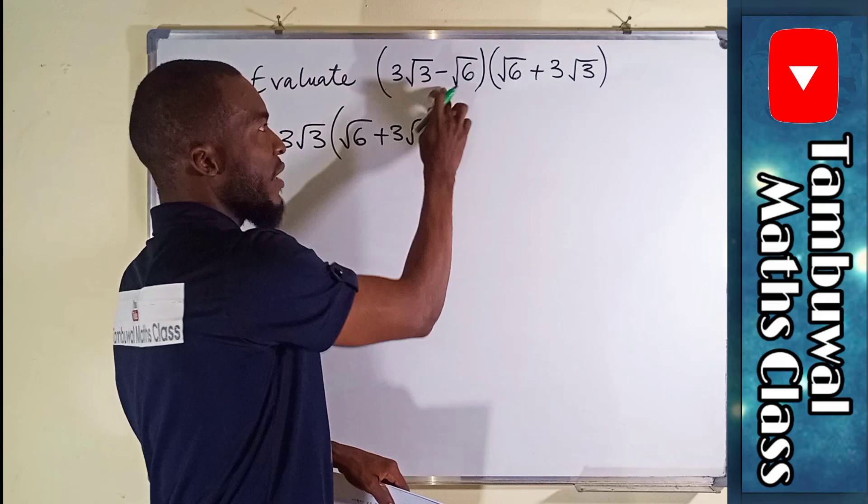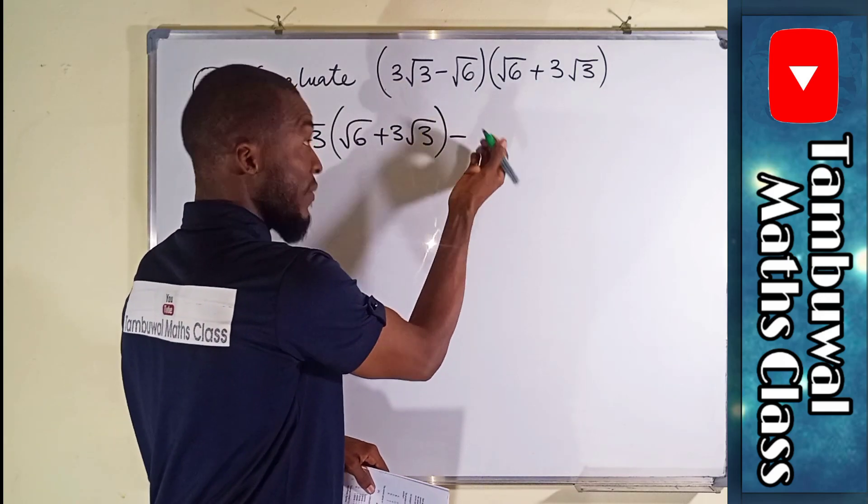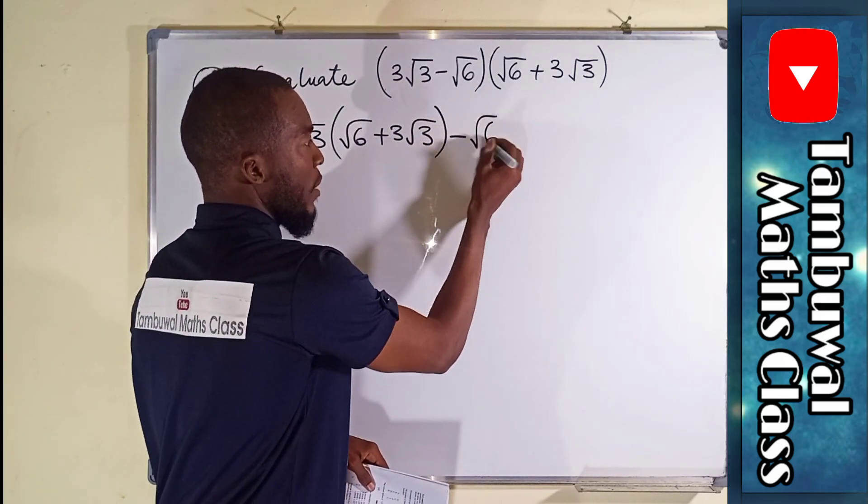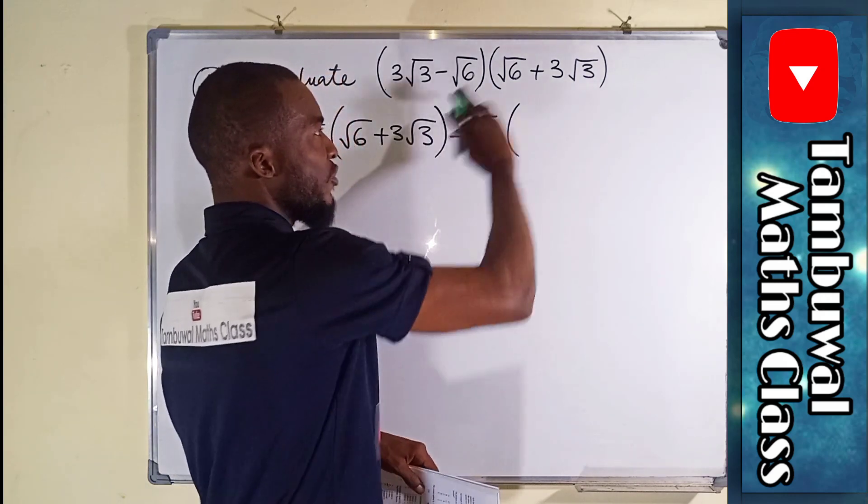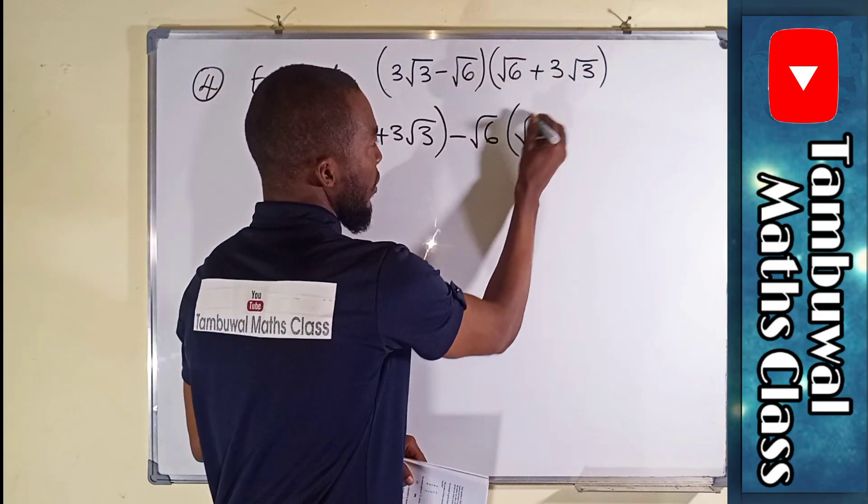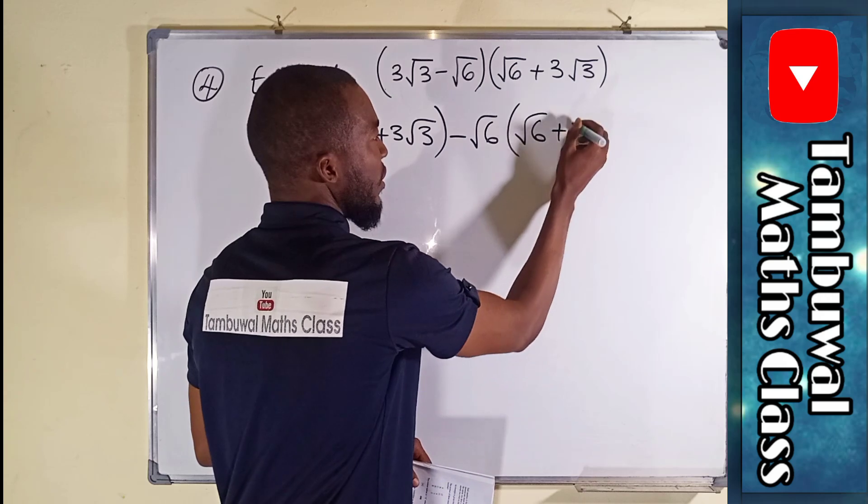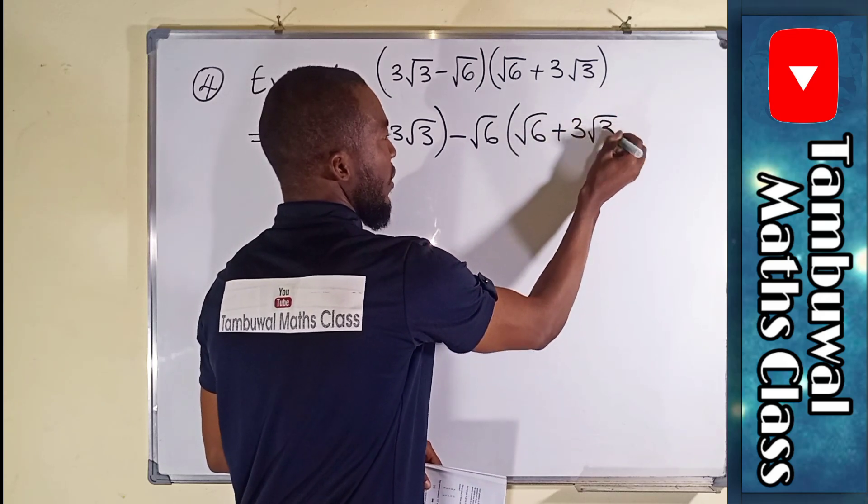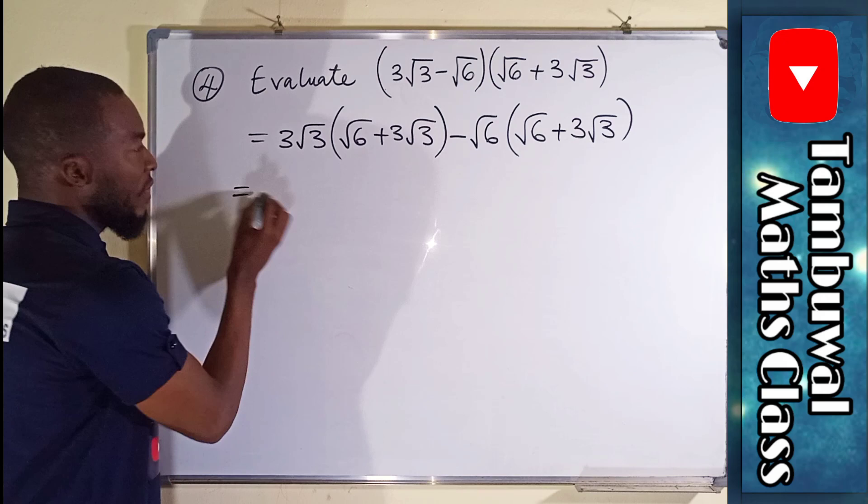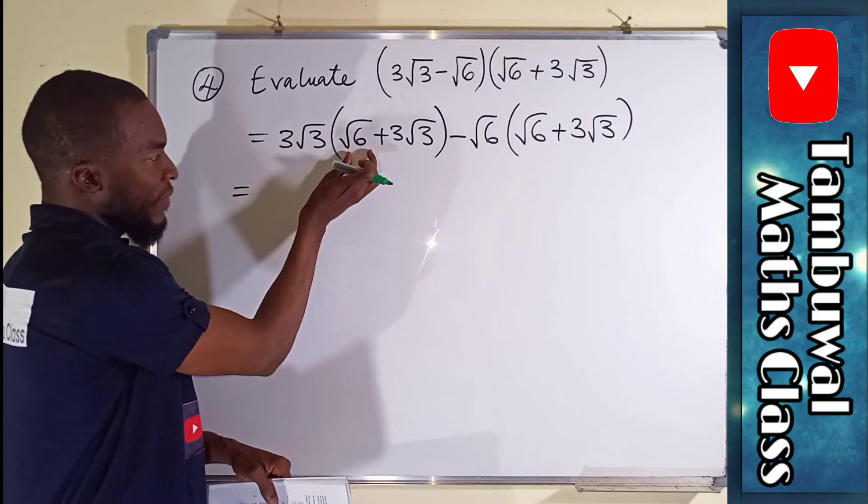Then you take the second term which is negative √6, and you expand through or multiply through the second bracket (√6 + 3√3). This is equal to...